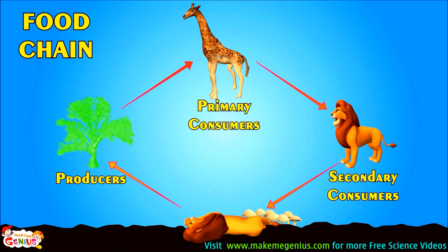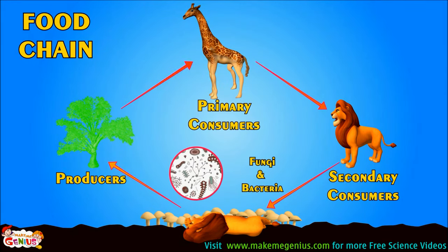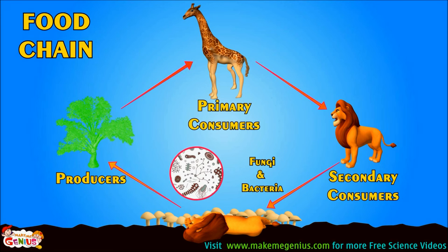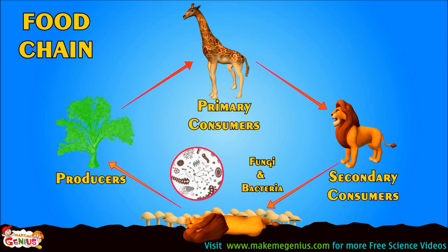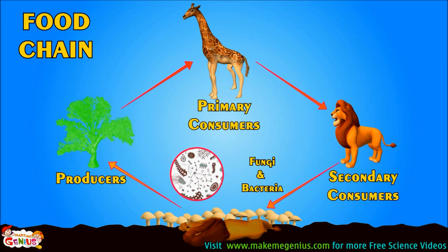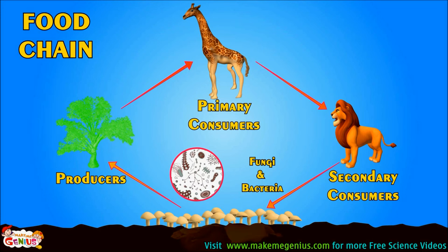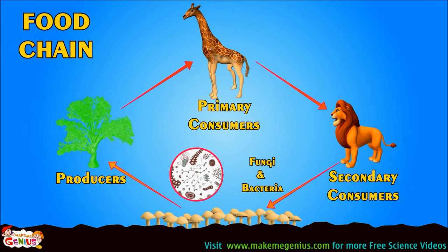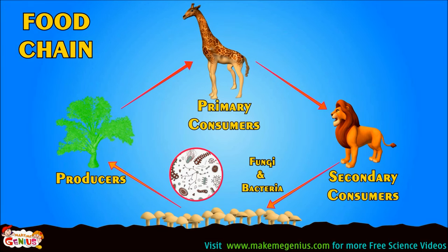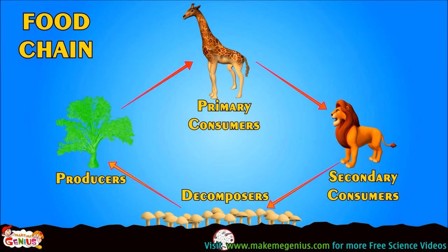There is one more part of this food chain: fungi and bacteria in soil. When animals die, these fungi and bacteria in soil decompose their dead bodies. They become nutrients, and these nutrients are again used by plants to make food. When a lion dies, its body is decomposed in soil by bacteria and fungi and turns into nutrients, which are again used by plants. These fungi and bacteria are called decomposers, and decomposers are an important part of the food chain.